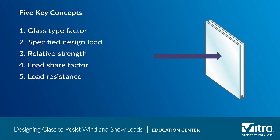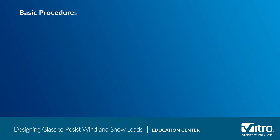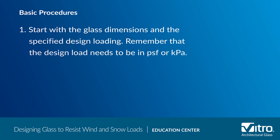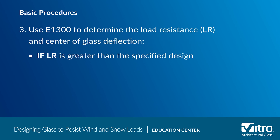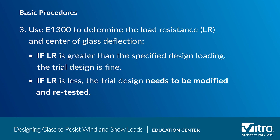Now that we've covered the assumptions and what drives the calculations, we'll go through the basic design procedure you should follow. Step one: start with the glass dimensions and the specified design loading — remember that the design load needs to be in pounds per square foot or kilopascals. Step two: think about the glass thicknesses and types you'd like to use and formulate a trial design. Step three: use ASTM E1300 to determine the load resistance and center of glass deflection. If the load resistance is greater than the specified design loading, your trial design is fine and you can proceed. If the load resistance is less than the specified design loading, then the trial design needs to be modified and retested.